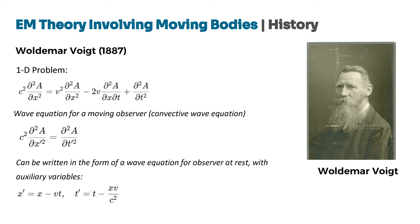Voldemar Voigt (1850–1919), a German physicist, made contributions to several areas of physics, particularly in optics and crystallography. One of his works was the introduction of what is now known as the Voigt Transformation. In 1887, Voigt was working on the convective wave equation, which describes wave propagation as observed by a moving observer. His objective was to convert this equation into a form corresponding to a wave equation with the observer at rest, which simplified the analysis particularly in terms of the propagation constant and the frequency domain.